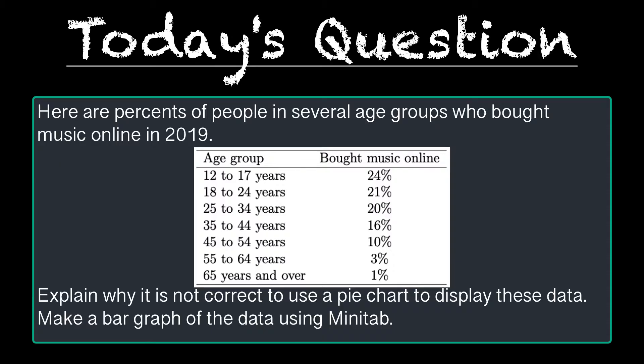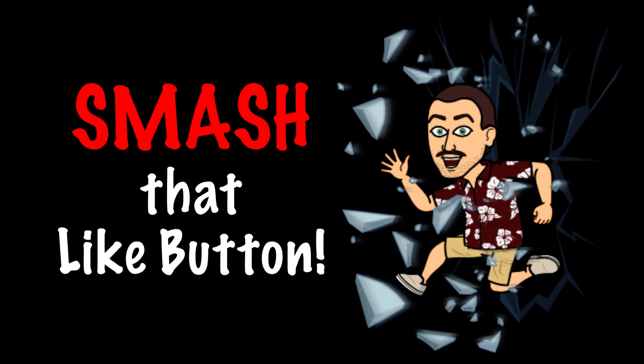The question we're working on today is: Here are the percent of people in several age groups who bought music online in 2019. Explain why it is not correct to use a pie chart to display these data. Make a bar graph of the data using Minitab. Smash that like button and let's get started.